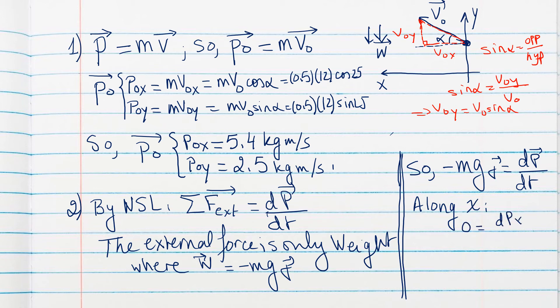Since dpx/dt equals zero, ask yourself: what function, when derived with respect to time, gives zero? The answer is a constant. Therefore px equals a constant, which is p0x — the initial momentum on the x-axis. Since momentum along x starts at p0x and remains constant, px equals p0x, which we already found to be approximately 5.4 kg·m/s.